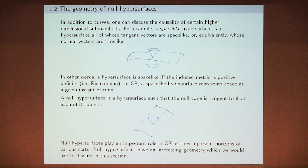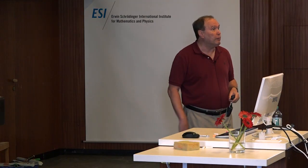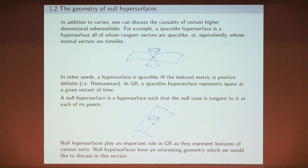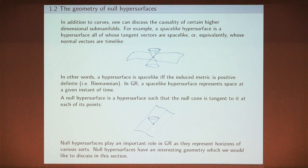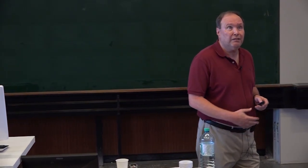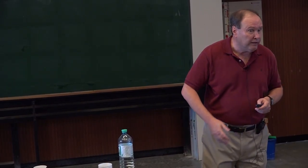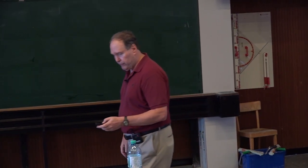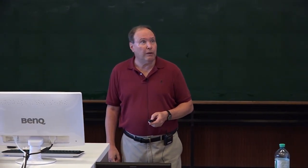In addition to discussing the causality of curves, you can discuss the causality of higher dimensional sub-manifolds. You've already heard a lot about space-like hypersurfaces, which are hypersurfaces where the induced metric is Riemannian. Physically, it corresponds to space at a given instant of time, and you've heard about the initial data problem and constraints associated with such space-like hypersurfaces. A null hypersurface is one where the null cone at each point is tangent to the hypersurface. Null hypersurfaces represent horizons of various sorts in general relativity — like the event horizon in Schwarzschild or Kerr — and have interesting geometry we want to discuss today.